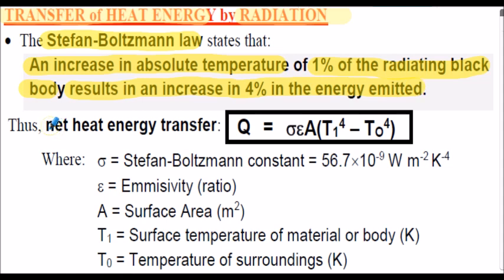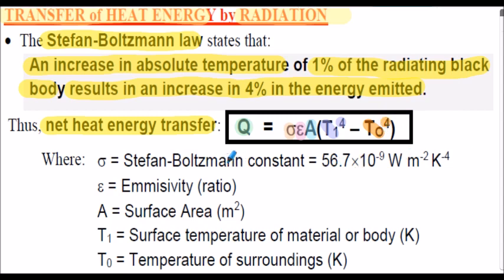Given the net heat transfer equation: Q is equal to sigma multiplied by epsilon multiplied by A, that's multiplied by, in brackets, T1 to the power of 4 minus T0 to the power of 4.